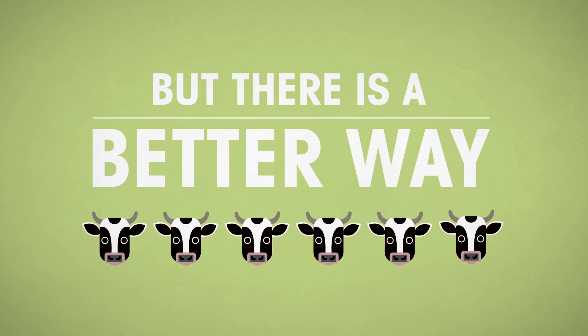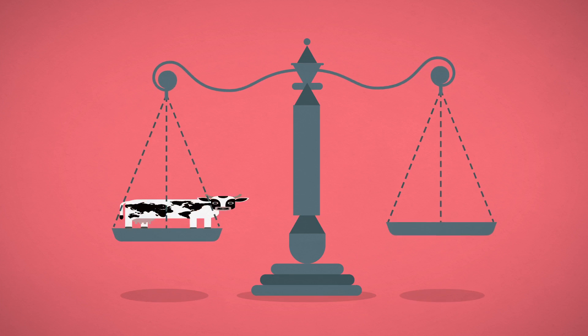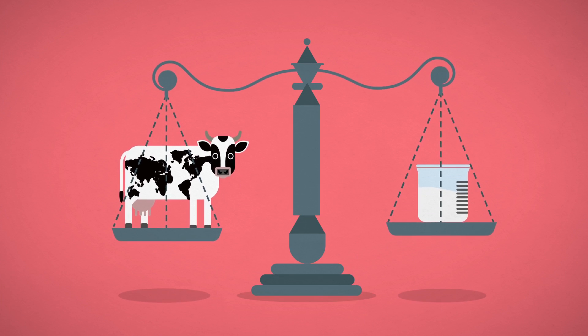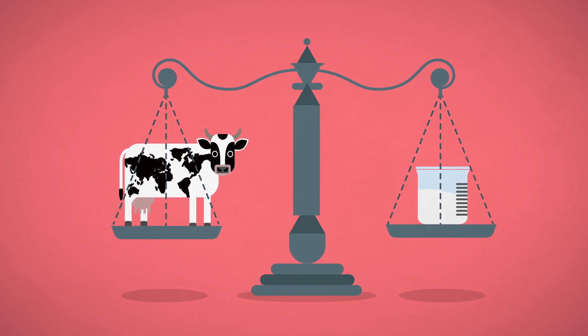If each cow produced just over half a glass more milk each day, it will be enough to meet our growing need. Healthy cows produce more milk. So increased efforts to keep cows free from disease is one way to achieve this.